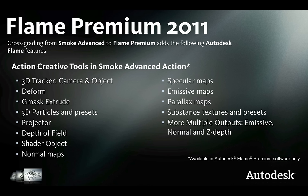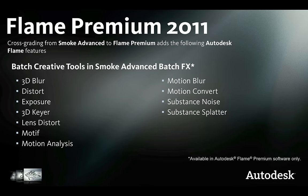If you're a current Smoke Advanced user and you cross-grade to Flame Premium, of course you get the full Flame software license. You also get access to Lustre for real-time color grading. Even when you're working within that Smoke timeline inside of Flame Premium, you have access to all of these action nodes and tools that you didn't have before — the 3D tracker, the particle system, substance textures and presets. That's really going to change the way you work with action. That's the real value proposition of migrating from Smoke Advanced to Flame Premium: you get all these extra tools but you can still use that Smoke interface that you know and love.